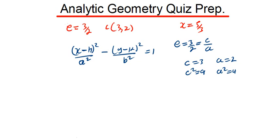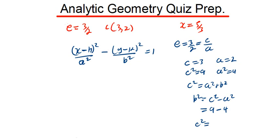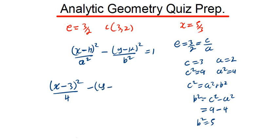Since eccentricity equals c over a equals 3/2, our c is 3 and c squared is 9, and a is 2 so a squared is 4. For a hyperbola, c squared equals a squared plus b squared, so b squared equals c squared minus a squared, which is 9 minus 4, giving b squared equals 5. The standard equation is therefore (x minus 3) squared over 4, minus (y minus 2) squared over 5, equals 1.